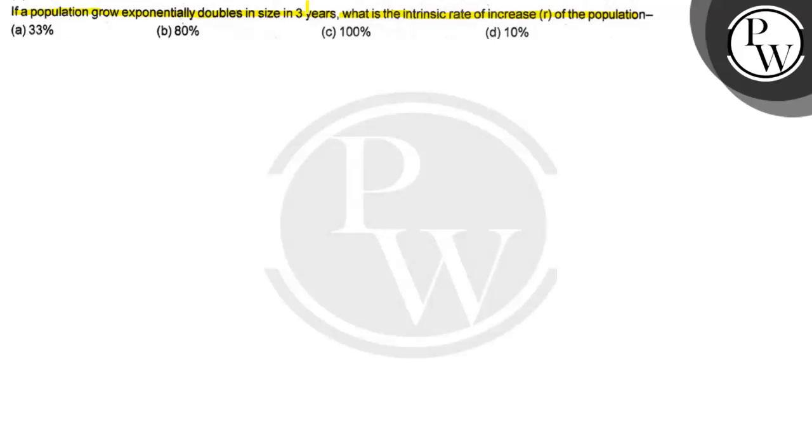We're given 3 years, meaning in 3 years the population size doubles. And we're asked what is the intrinsic rate of natural increase. So exponentially, first we will write the concept of this question, and then we will apply the question to it.